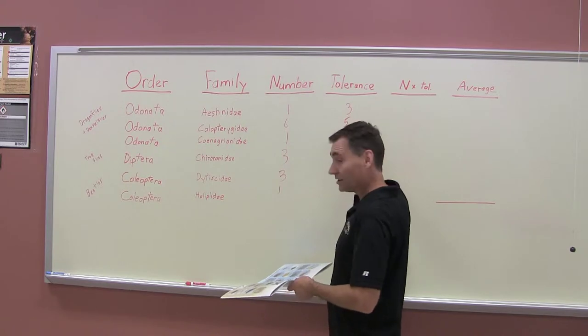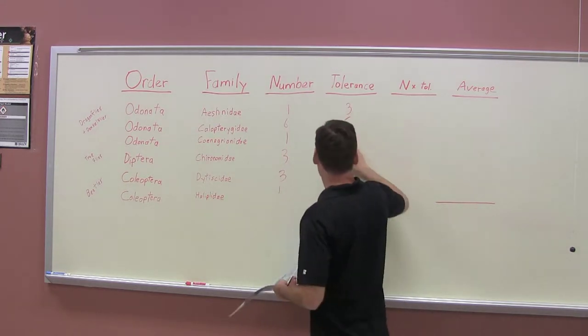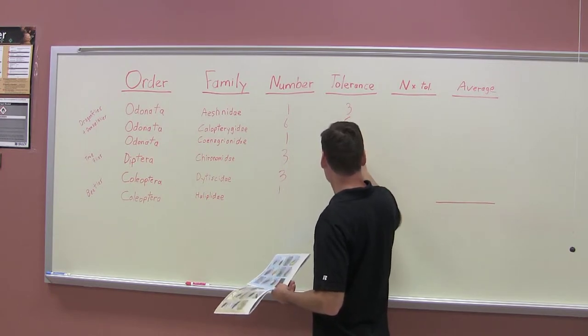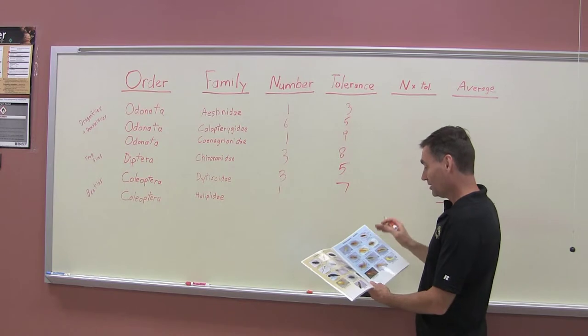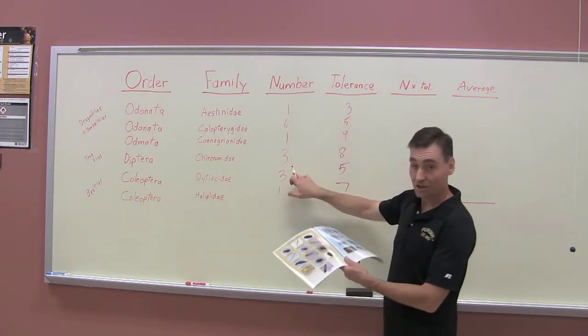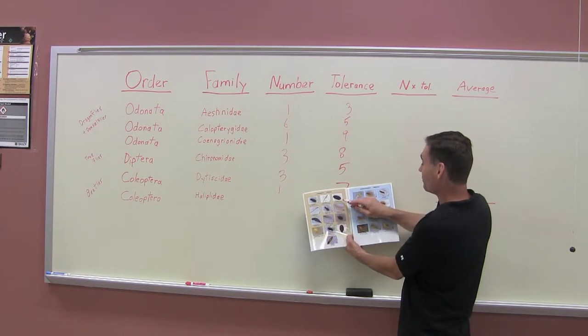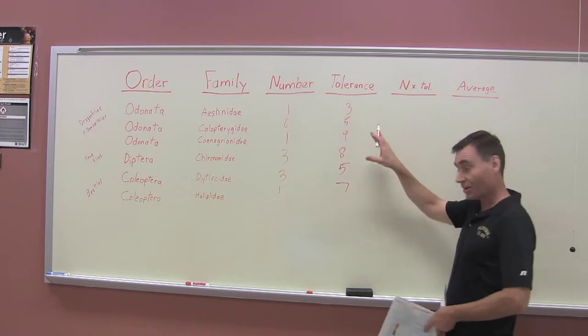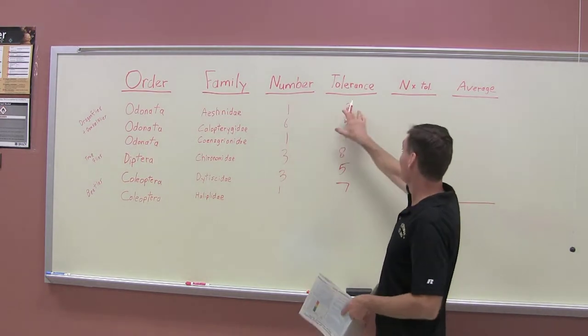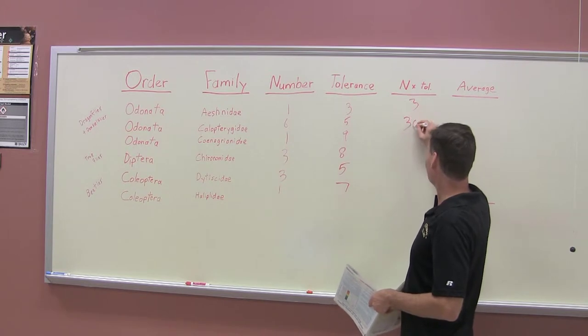Those tolerance values are 3, 5, 9, 8, 5, and 7. For example, for the predacious diving beetles, we caught three individuals and their tolerance to pollution is five, so we write five. We multiply those out because we want an average: one times three is three, six times five is thirty, one times nine is nine, three times eight is twenty-four, three times five is fifteen, and one times seven is seven.